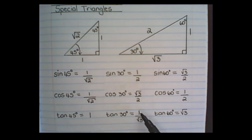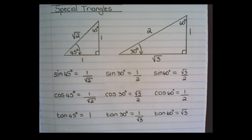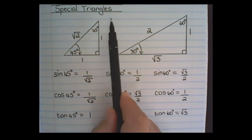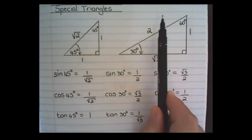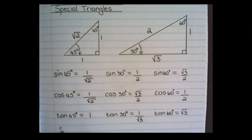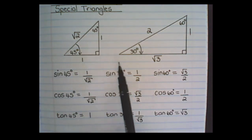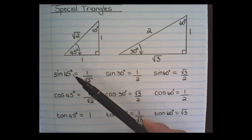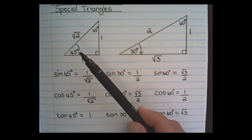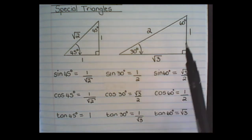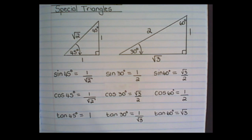You do not need to memorize these values. You simply need to memorize these two triangles. This will allow us to solve special angles — 45 degrees, 30 and 60 degrees — without the use of a calculator.